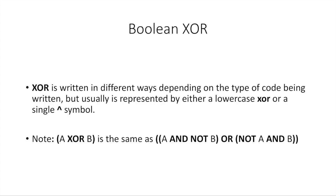XOR is written in different ways depending on the type of code being written, but it's usually represented either by a lowercase XOR — they spell it out — or it's a single little hat symbol. If you didn't have this XOR operator, you could also just write out the full thing, which is: A XOR B is the same as A AND NOT B, OR NOT A AND B. You can verify this by making a table of A and B with both true, one true one false, one false one true, and both false, and running it through that expression — and you'll see that you get the same result.